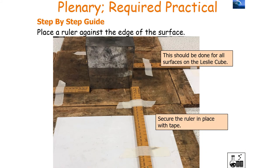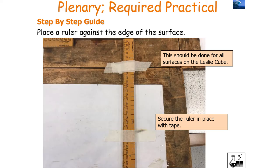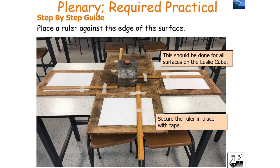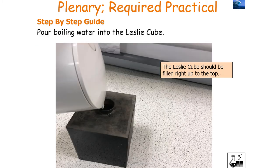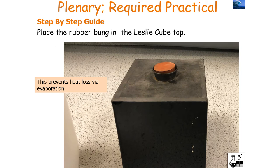Place a ruler against the edge of each surface — this should be done for all four surfaces of the Leslie cube — and secure the ruler in place with tape. Then pour the boiling water into the Leslie cube and place the rubber bung in the top. Doing this prevents heat loss via evaporation, which is important because we want to measure heat loss via radiation in this investigation, not evaporation.